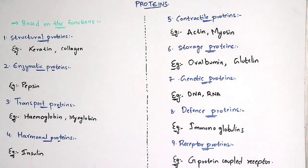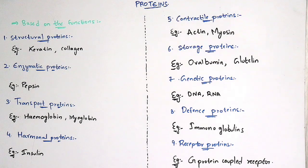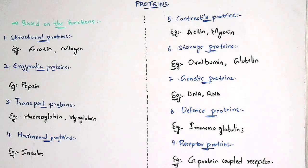Hormonal proteins, as the name indicates, consist of hormones. For example, insulin and growth hormone. Growth hormone is stimulated from the growth stimulating hormone (GSH). In intermediate classes you may have learned that GSH stimulates growth hormone, which consists of these hormonal proteins. The main function of growth hormone is to maintain the growth of our human body.